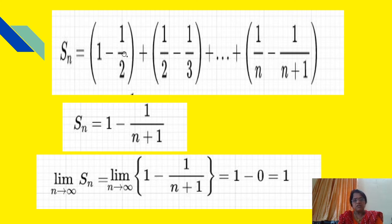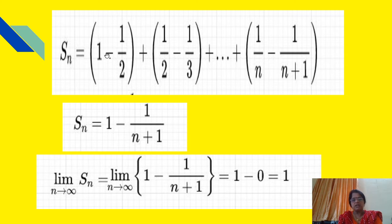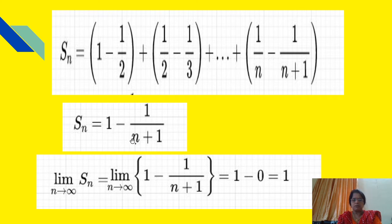We can see that −1/2 cancels with +1/2, −1/3 cancels with the next +1/3, and +1/n cancels with its previous term −1/n. Therefore only two terms remain: 1 and −1/(n+1), so Sn = 1 − 1/(n+1).